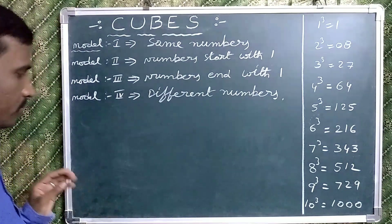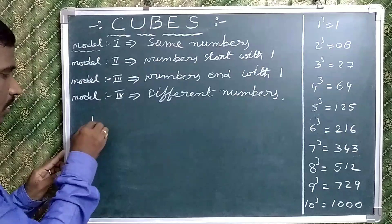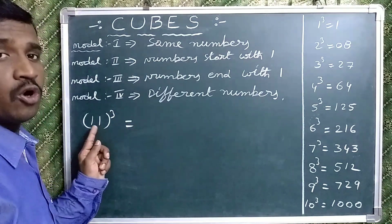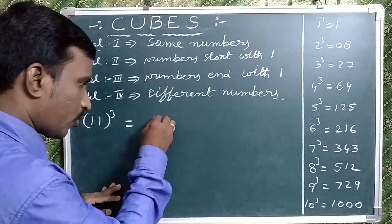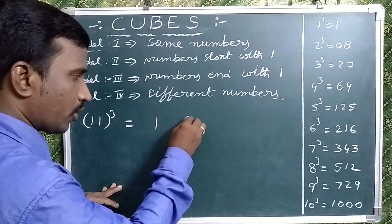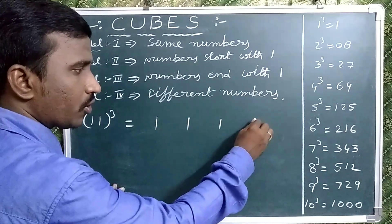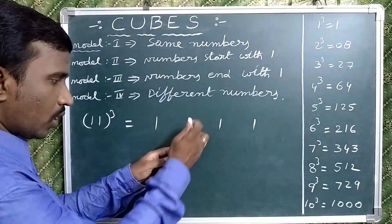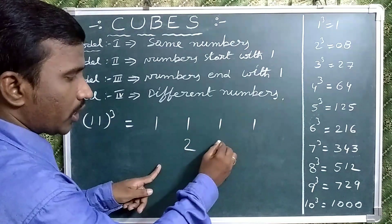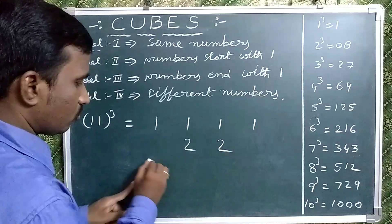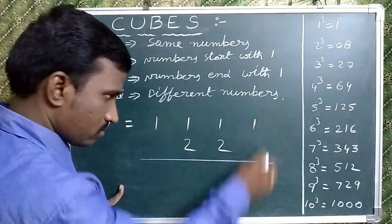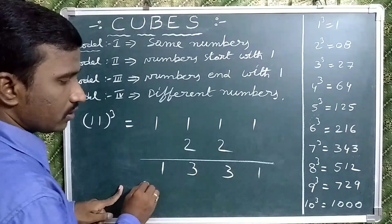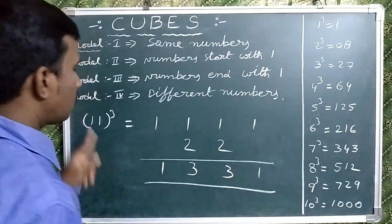Now observe 11 cube. Write 1 cube four times: 1, 1, 1, 1. Double the middle numbers: 1 times 2 is 2, 1 times 2 is 2. Add these two rows: 1, 3, 3, 1. That is the 11 cube — 1331.